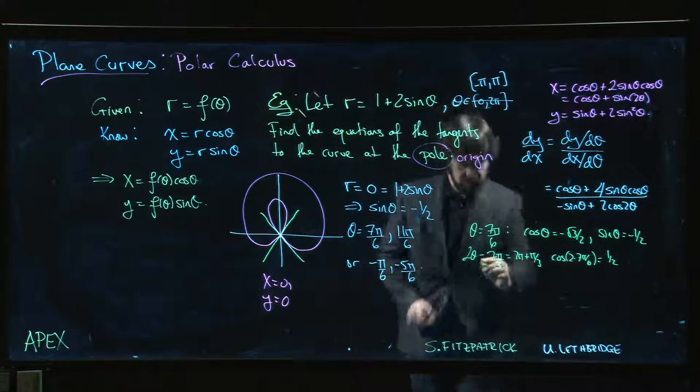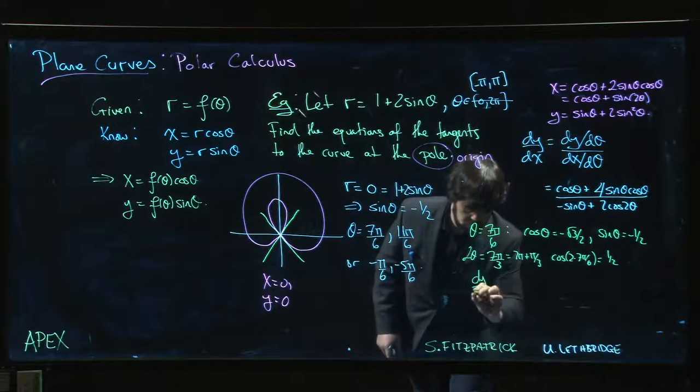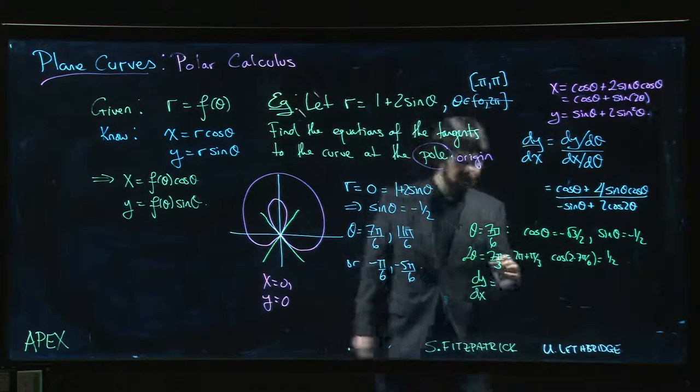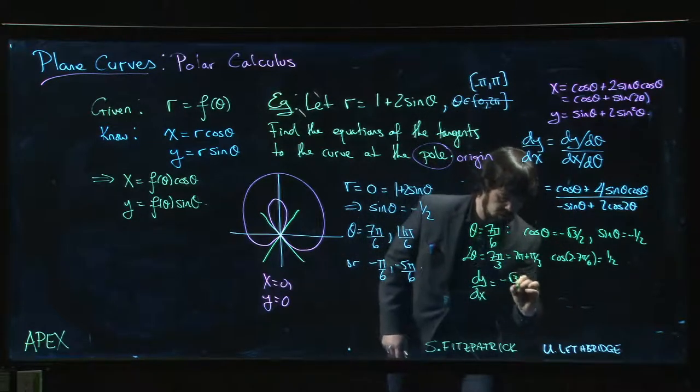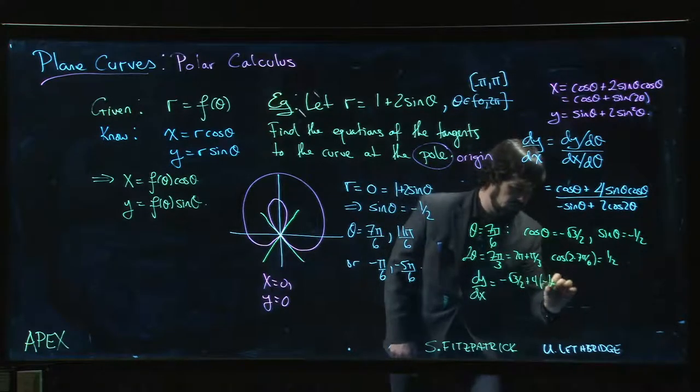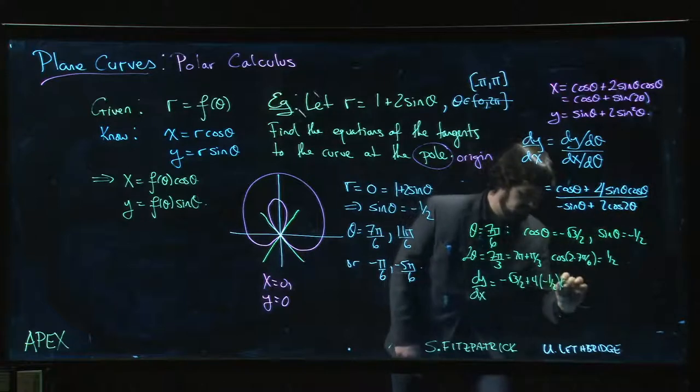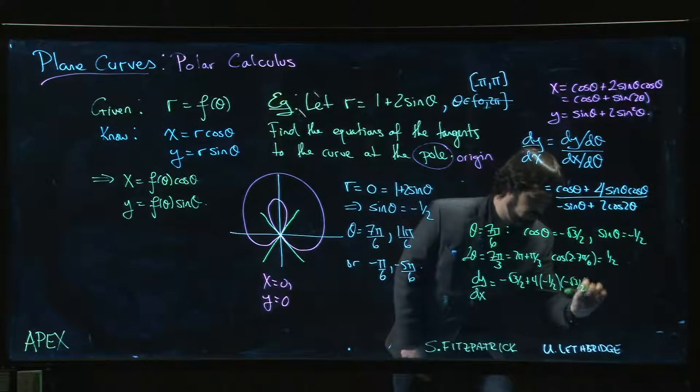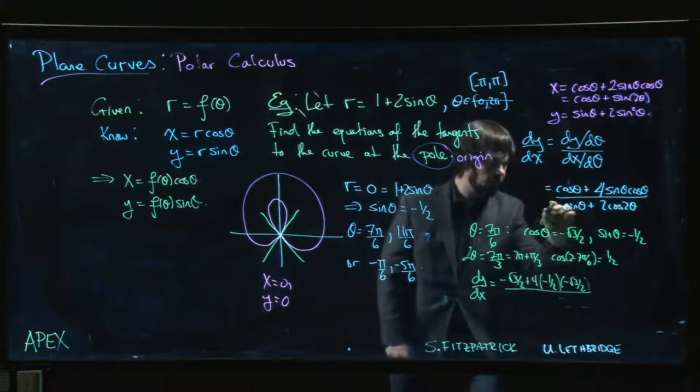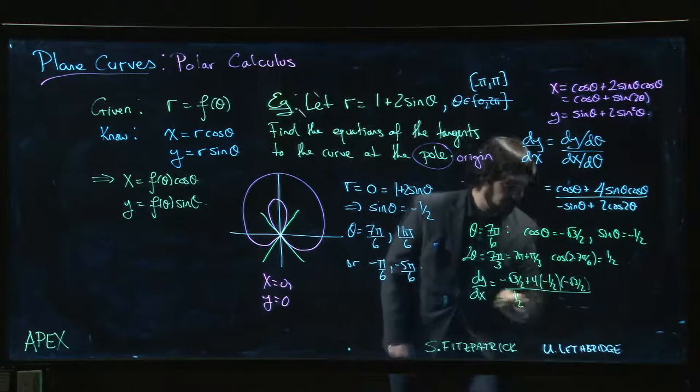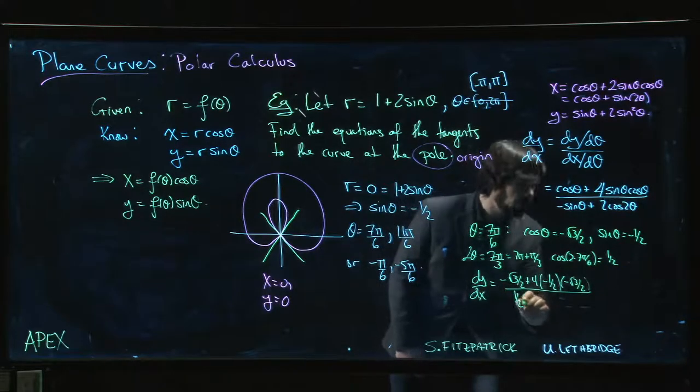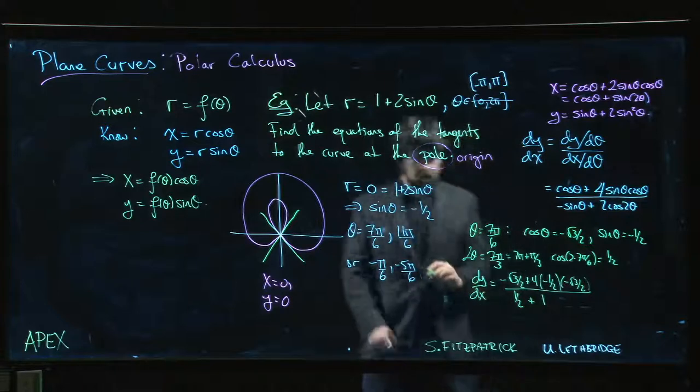and we find that dy dx is going to be, so up top, we're going to have minus root 3 over 2 plus 4 times minus 1 half times minus root 3 over 2. And on the bottom, we've got minus minus 1 half, so 1 half plus 2 times 1 half. So that's just going to be 1.